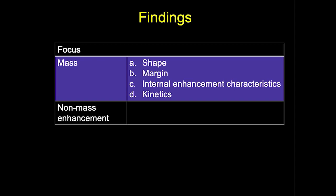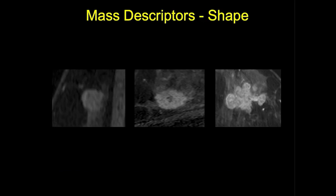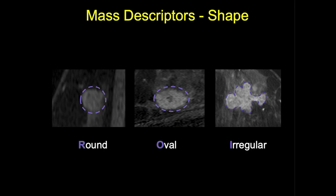A mass is a three-dimensional space-occupying lesion described by its shape, margins, and internal enhancement characteristics. Similar to mammography and ultrasound, shapes are described as round, oval, and irregular. A round mass is spherical; an oval mass can contain up to three gentle lobulations; and an irregular mass is uneven and cannot be characterized by one of the other shapes.